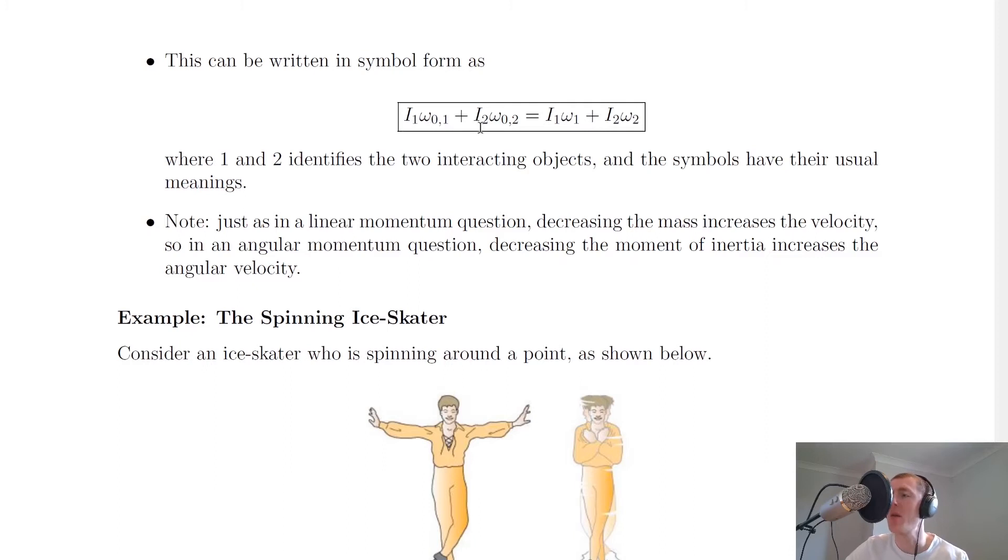So the symbols have their usual meanings. I1 and I2, those are my moments of inertia of object 1 and object 2 respectively. Omega 0 1 and omega 0 2, that is my initial angular velocities of my first and second object respectively. And then omega 1 and omega 2 are my final angular velocities of my first and second object respectively. So it probably just looks a bit more complex than what it actually is.